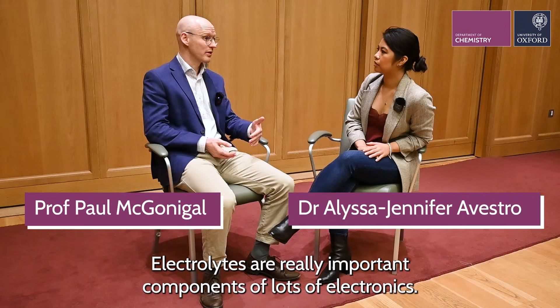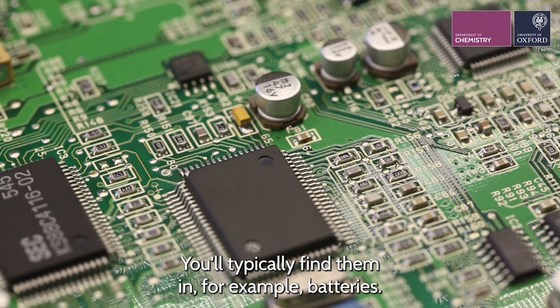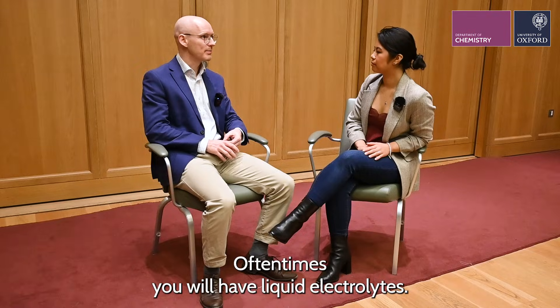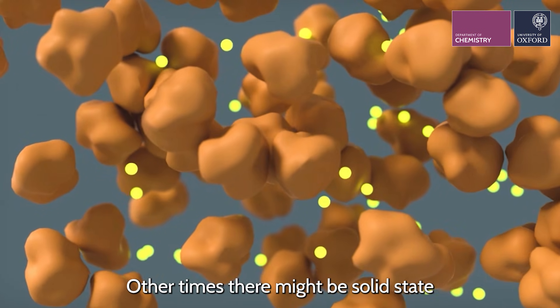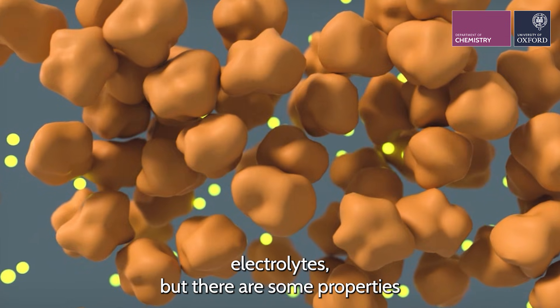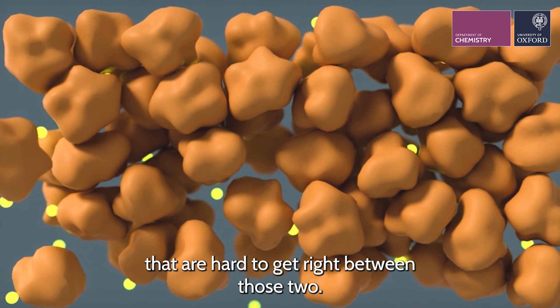Electrolytes are really important components of lots of electronics. You will typically find them in, for example, batteries. Oftentimes you will have liquid electrolytes, other times there might be solid-state electrolytes, but there are some properties that are hard to get right between those two.